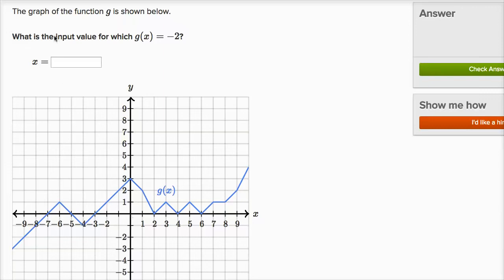So what is the input value for which g of x is equal to negative two? Well this graph right over here, this is y equals g of x. So g of x equaling negative two means y is equal to negative two.